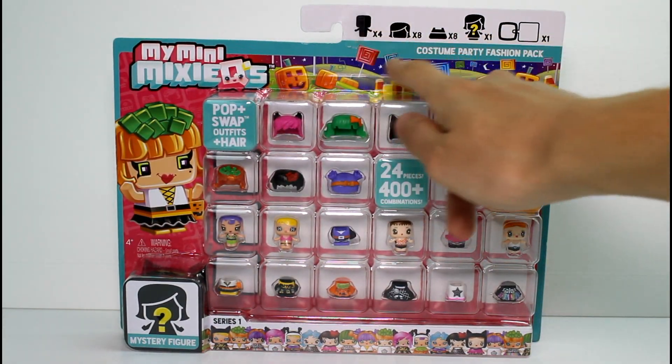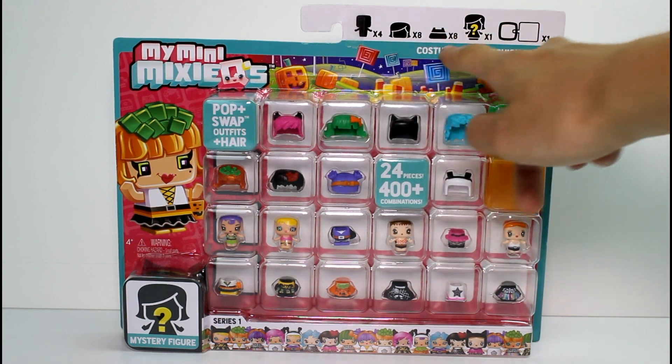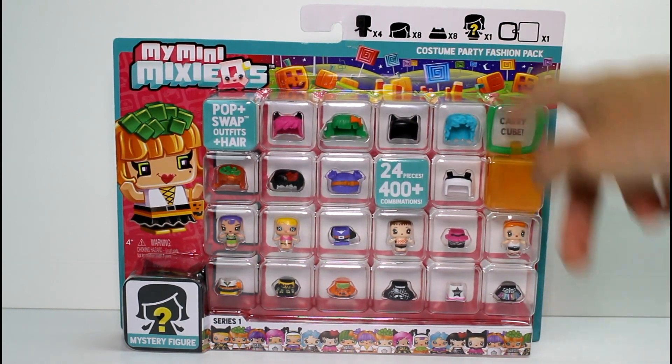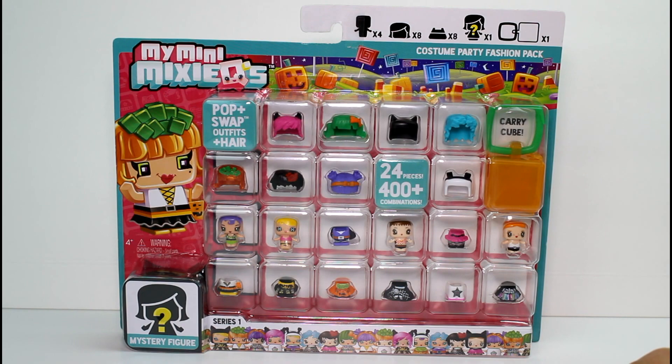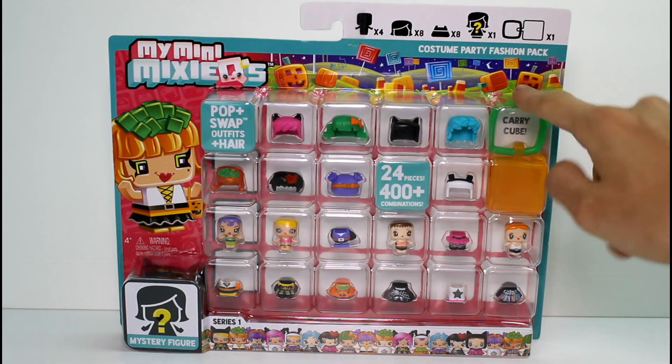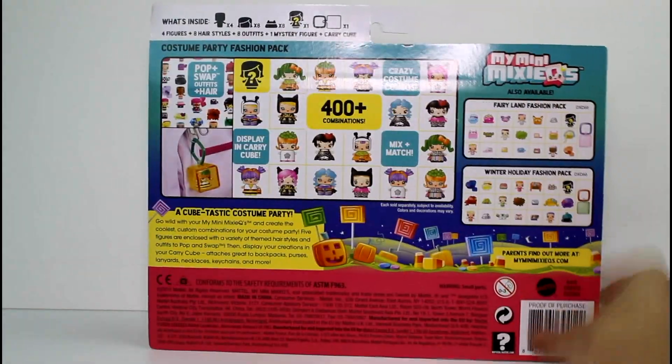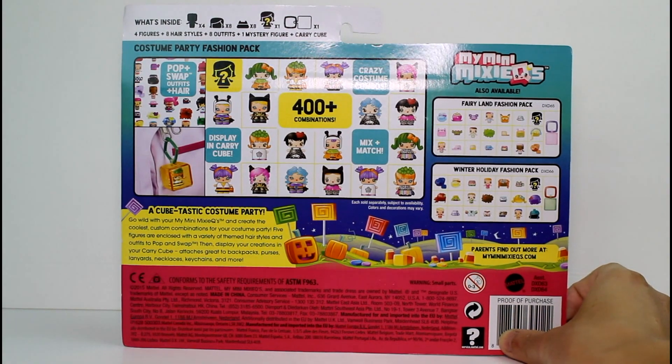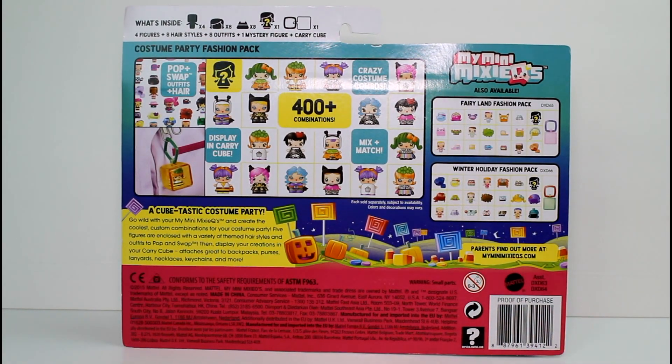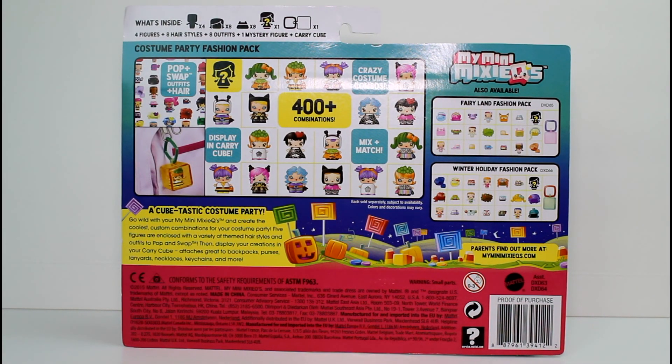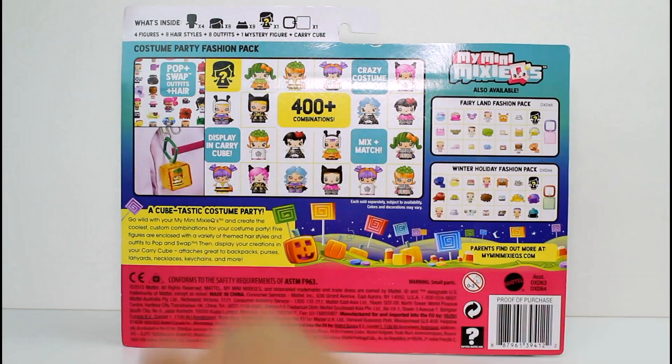So you get four figures, eight hair, eight costumes, and one mystery person. I'm pretty excited. And this, whatever the heck this is, a carry cube. I'll have to take a closer look at that one. And then it says 400 plus combinations display in the carry cube. Okay, I like that.